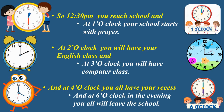In the third clock, the short hand is on 2 — that is the hour hand — and the long hand is on 12 — that is the minute hand. So it is exactly 2 o'clock. At 2 o'clock, you will have your English class. In the fourth clock, the short hand is on 3 — that is the hour hand — and the long hand is on 12. So here it is exactly 3 o'clock. At 3 o'clock, you will have computer class.